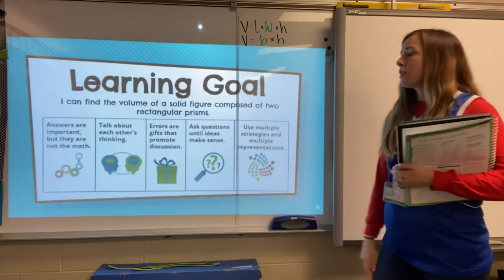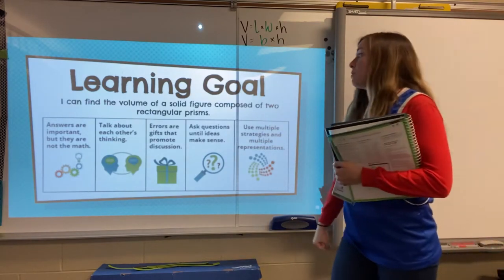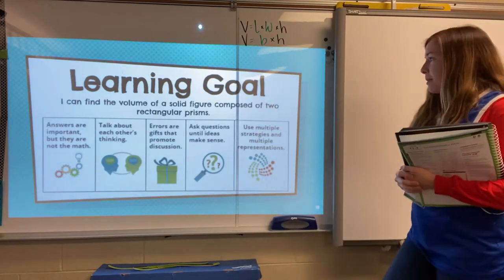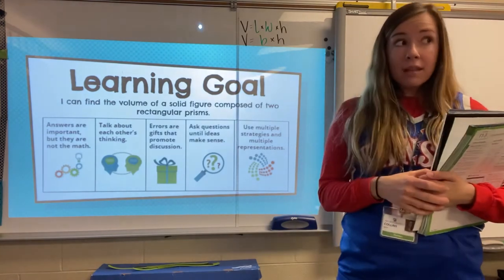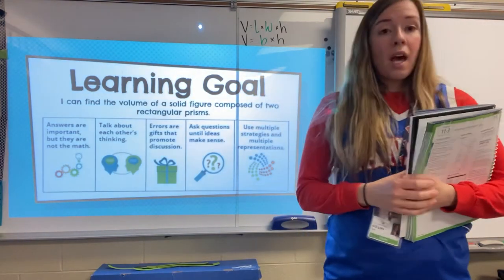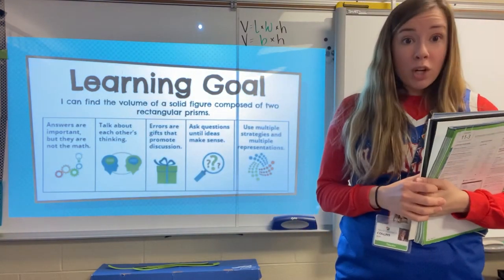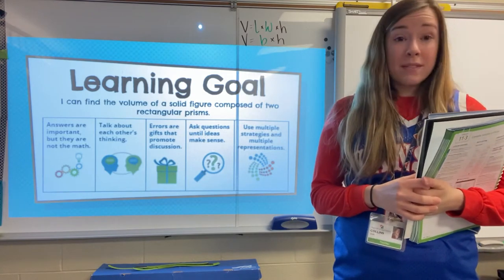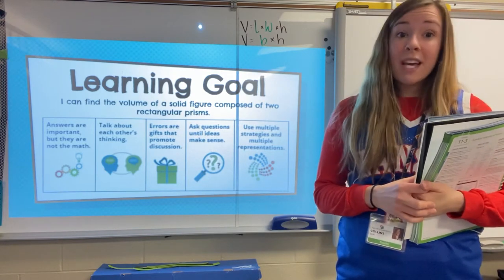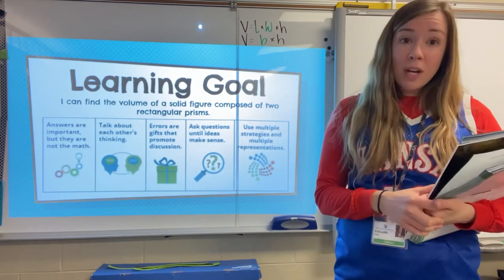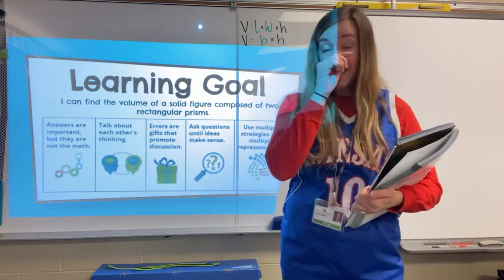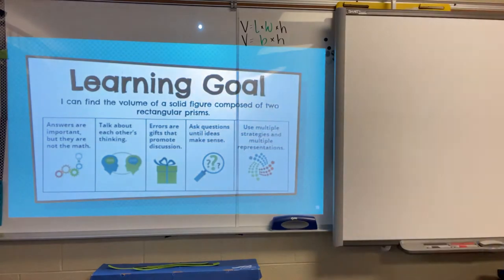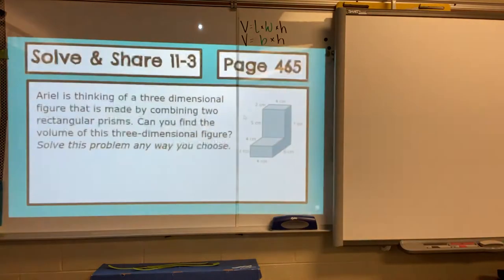Here's our learning goal. You can read it with me: I can find volume of a solid figure composed of two rectangular prisms. So today is going to be a little bit more challenging — I'm going to warn you. It's something that we can work through, but you have to go slow, take your time, and write stuff down. If you choose not to do that, it will be much harder and won't make a whole lot of sense. So let's make sure we're following along and writing things down.